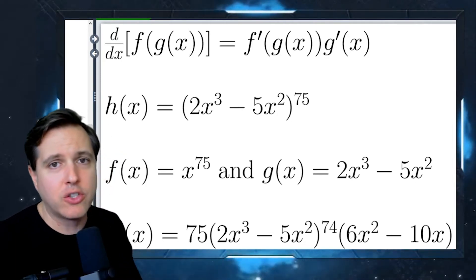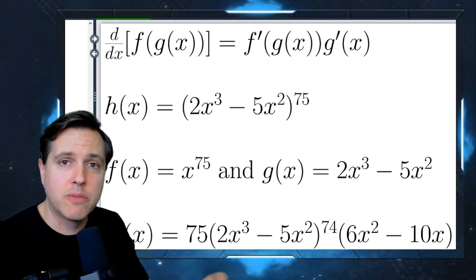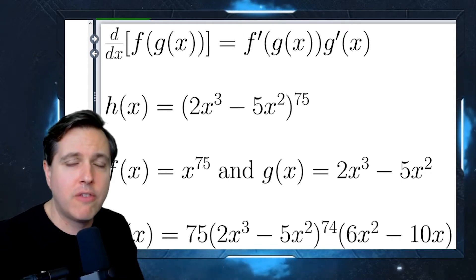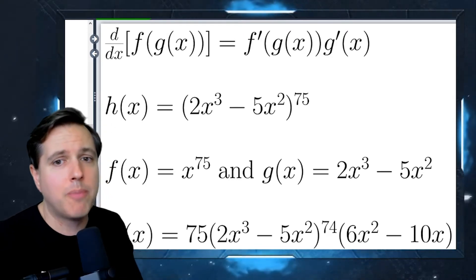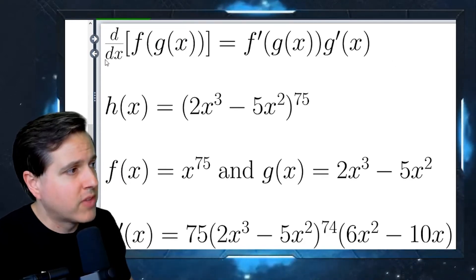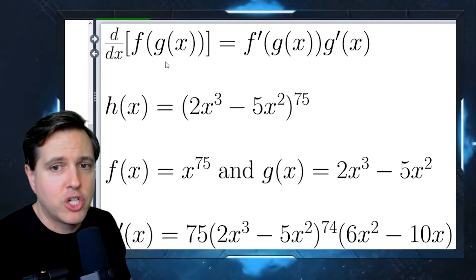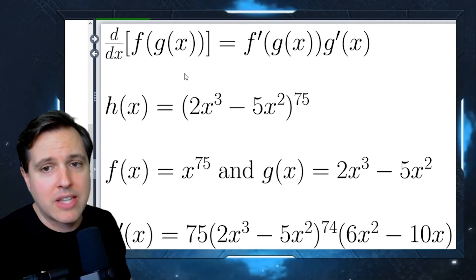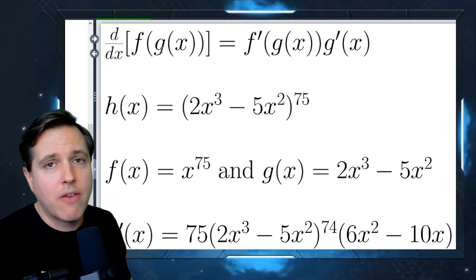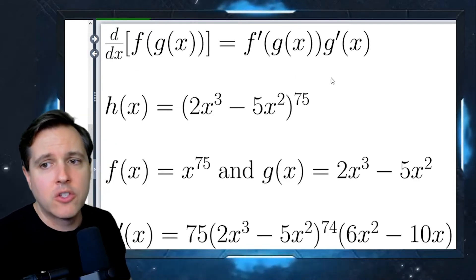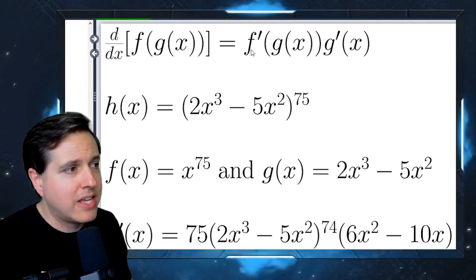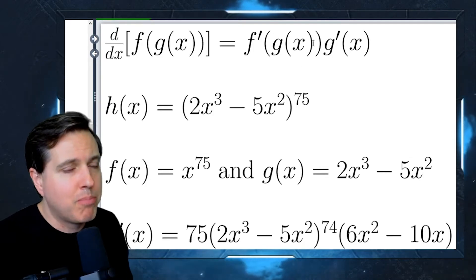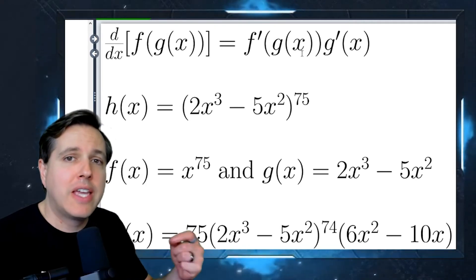The chain rule has to do with taking the derivative of a composition of functions. We recently looked at how to take the derivative when two functions are multiplying or dividing each other. Now we're looking at how you take the derivative when two functions are composed. The rule says: if we want to take the derivative of f(g(x)) — where g is fed into f — you take the derivative with respect to the outer function f and keep the input g(x) the same.